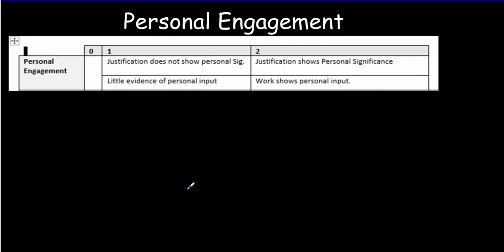Let's take a look at each scoring category in more detail. Personal engagement has two aspects: one having to do with your justification of the project - did you say why it's important, why was it interesting to you, why is it relevant? And the second aspect is does your work show some personal input?